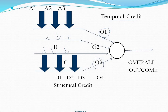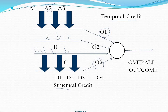For example, to get the overall outcome, we want to give credit to the first internal decision and the third internal decision — this type of credit is called temporal credit. Now, for this particular action — if action A2 has a contribution — we need to give credit to A2, and that we call structural credit assignment. Similarly, for the third internal decision, if action C1 has the main contribution to get this overall output, then we give some credit assignment to that particular action — that is structural credit assignment.